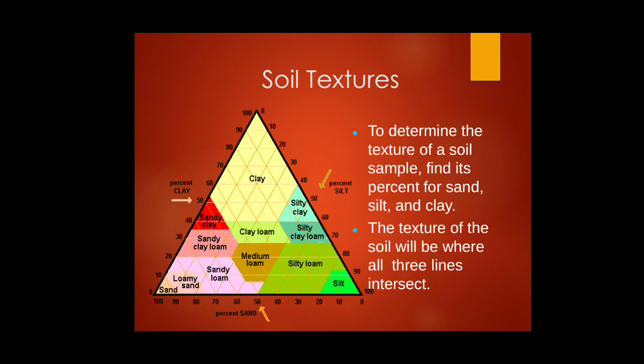A soil texture triangle classifies soil type by the percentage of clay, silt, and sand. The left side of the triangle shows 0–100% clay, the right side shows 0–100% silt, and the bottom shows 0–100% sand. For example, a point showing 60% clay, 40% silt, and 50% sand illustrates how soil composition is read from the triangle.